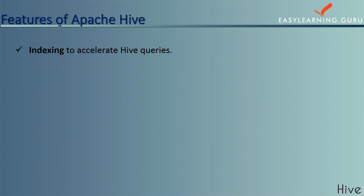Talking about the features of Hive: Apache Hive supports analysis of large data sets stored in HDFS and compatible file systems such as Amazon S3. It provides an SQL-like language called HQL — that is Hive Query Language — with schema on read, and transparently converts queries to MapReduce. By default, Hive stores metadata in an embedded Apache Derby database, and other client-server databases like MySQL can optionally be used.